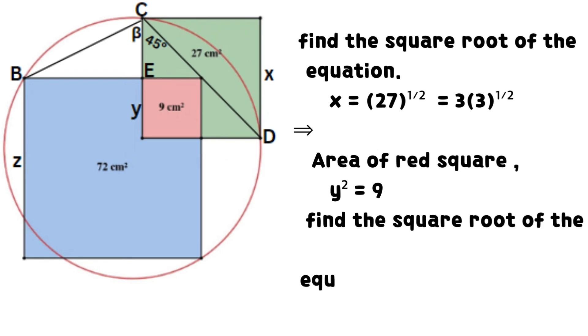This implies that the area of the red square: y² = 9. Find the square root of the equation so that y = 3 after simplification.